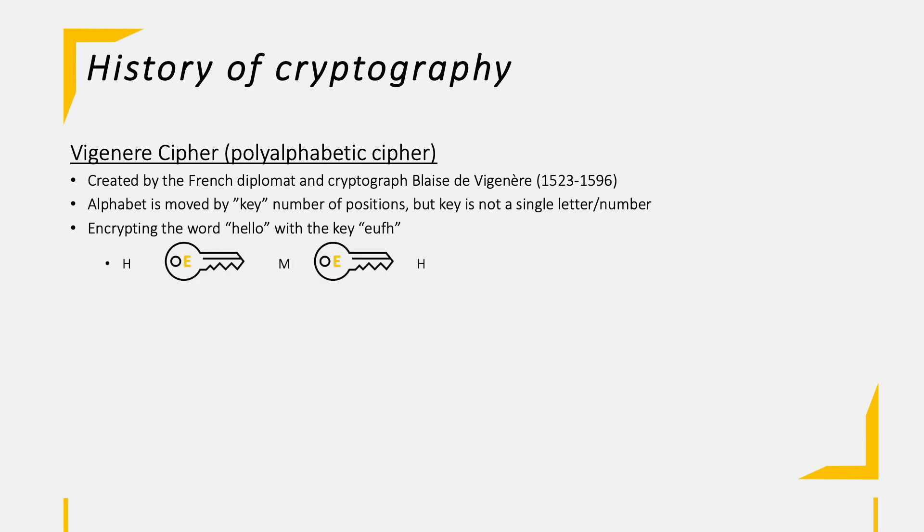We have an H which is shifted by E positions to the right. So it becomes an M. E becomes a V while being moved U steps to the right.